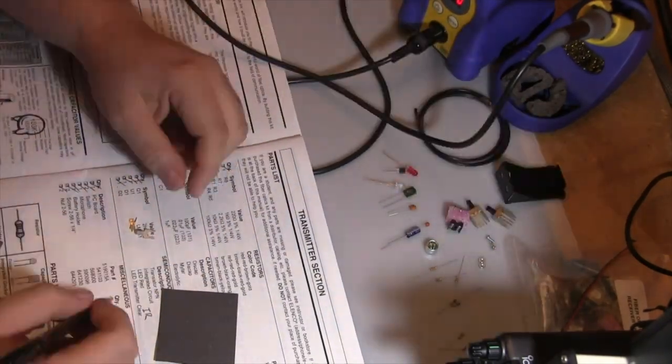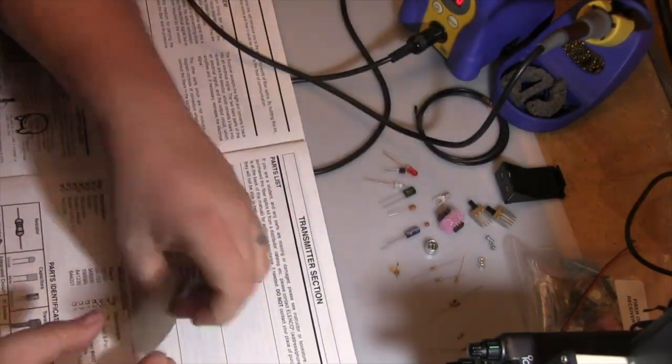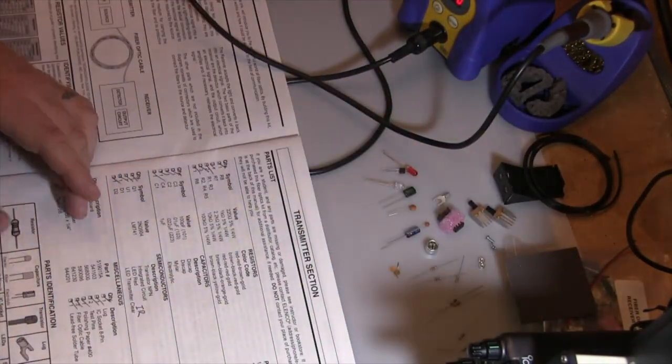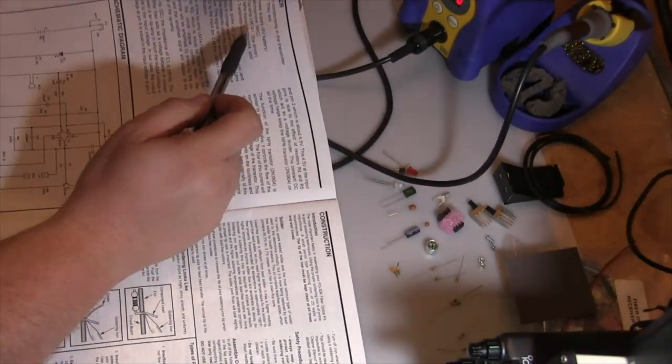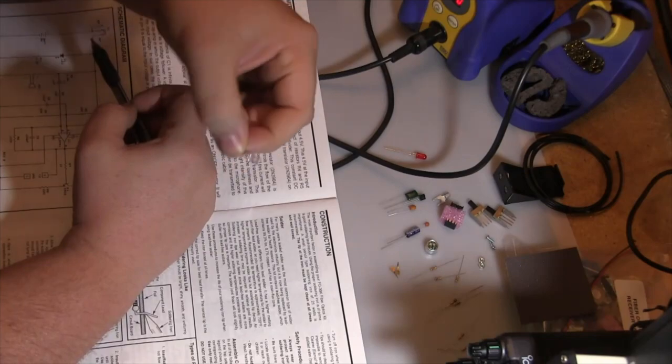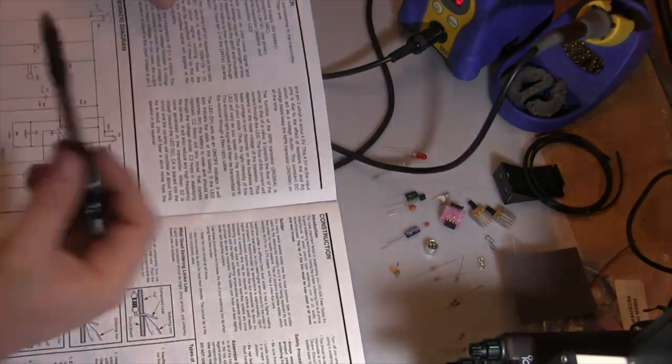Inside here are the switches that are used to power it on and off and turn on a tone generator. This has a built-in tone generator in the kit also, so you can have a tone go through it if you wanted to test the circuitry. Reading through here, this tells you exactly how the circuitry works.